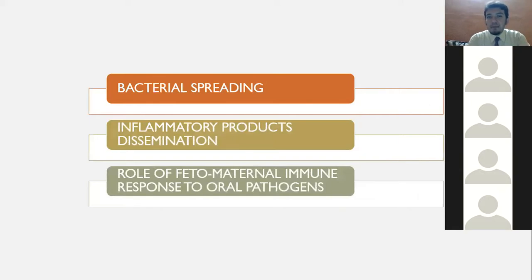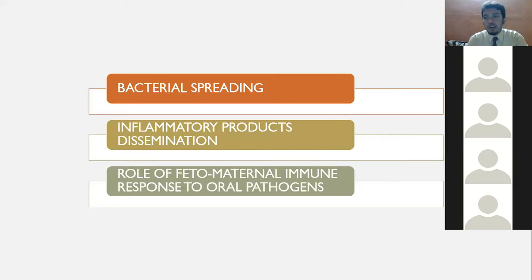Offenbacher proposed three mechanisms explaining periodontal disease's role in adverse pregnancy outcomes. First is bacterial spreading: bacteria present in the oral cavity — P. gingivalis or P. intermedia — spread via systemic circulation, penetrate the placenta, and enter amniotic fluid. F. nucleatum and P. intermedia have been found in amniotic fluid. Second is inflammatory products dissemination: inflammatory mediators from the gums — IL-1β, prostaglandins, TNF — cross placental membranes through blood circulation.